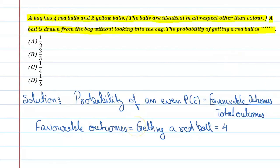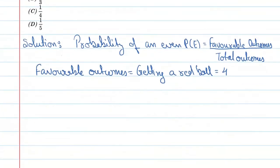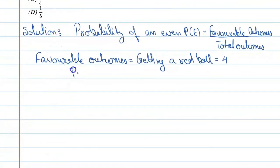And total outcomes is four plus two, that is six. Total outcomes is six.